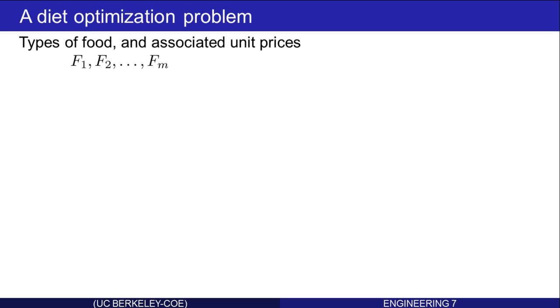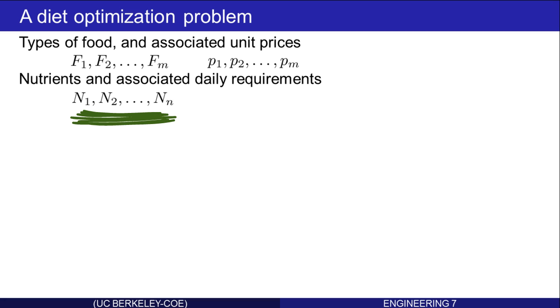We'll have again M types of food, F1, F2, FM, and now we'll add their prices, P1, P2, PM. Those are unit prices. The foods supply nutrients, but there's also daily requirements associated with each of those nutrients. So nutrients N1, N2, up to NN, and daily requirements R1, R2, up to RN.